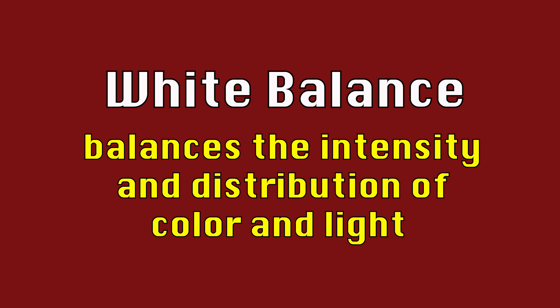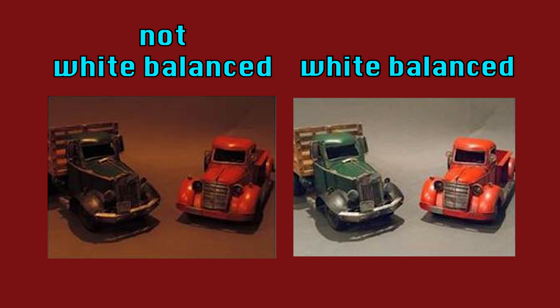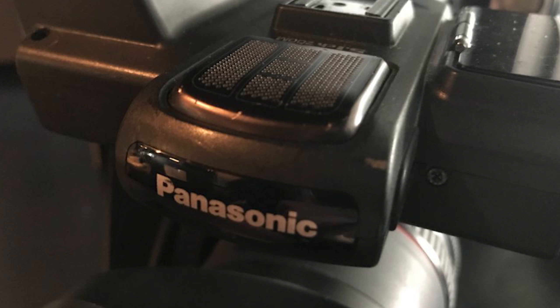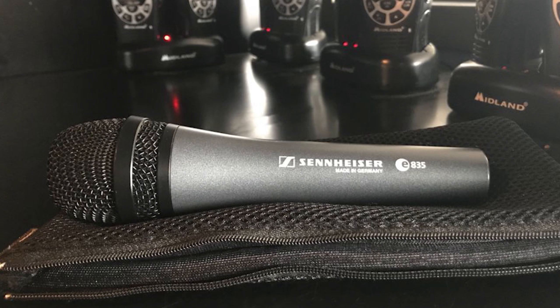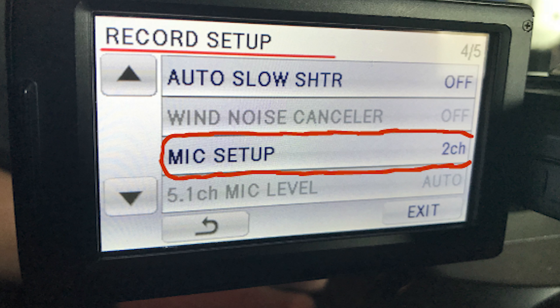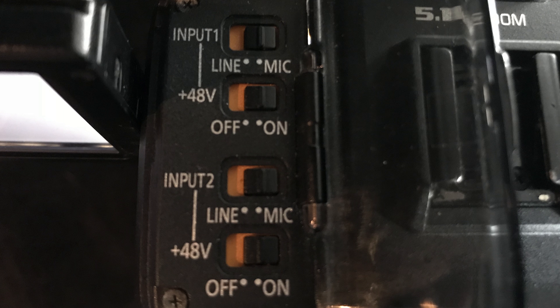Correctly white balancing your shots is very important as well. White balance balances the intensity and distribution of color and light, and you can adjust it to fit your environment. Without proper white balance, your shots could look dark or discolored. In order to record a video, you'll probably need to think about audio. The onboard mic records directly from the camera itself. Other microphones, such as handhelds, are available that hook up to your camera through the use of an XLR cable. Settings on the camera must be set correctly and the inputs must be accurately aligned. You can also utilize line levels, which send audio through premixed signals when recording.